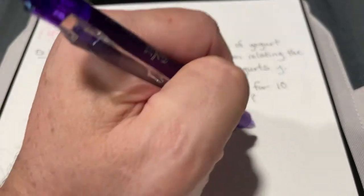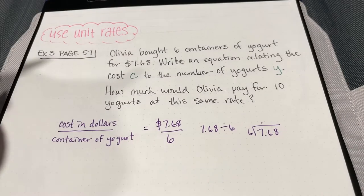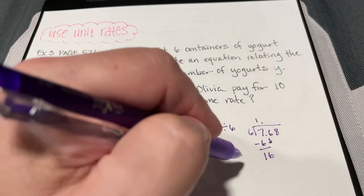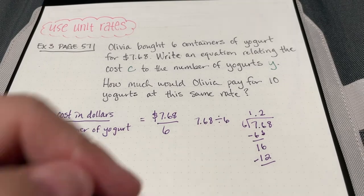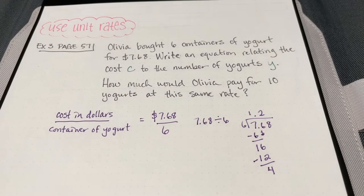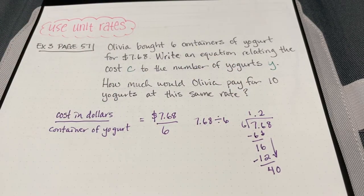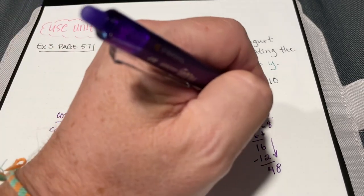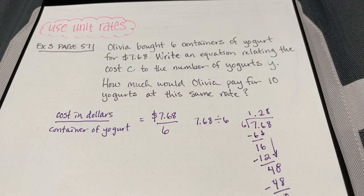6 goes into $7.68: 6 goes into 7 one time, 7 minus 6 is 1; bring down the 6 — 6 goes into 16 two times, 2 times 6 is 12, 16 minus 12 is 4; bring down the 8 — 6 goes into 48 eight times, 8 times 6 is 48. So the unit rate is $1.28 per container.